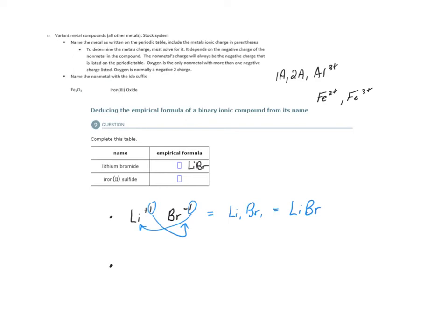Let's take a look at our guide for naming these variant metal compounds using the stock system. So we see what they did here. They named the metal as written on the periodic table, but they included the metal's ionic charge in parentheses.